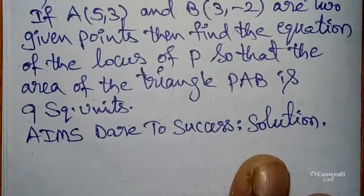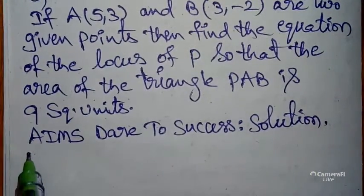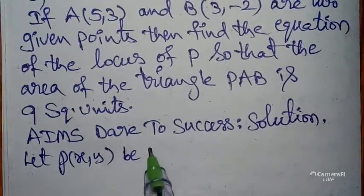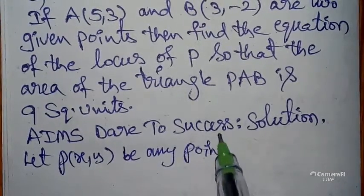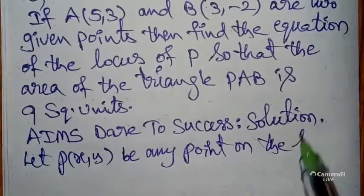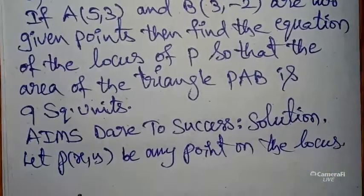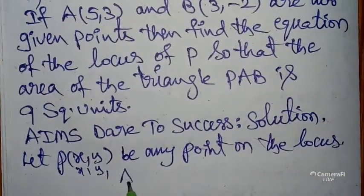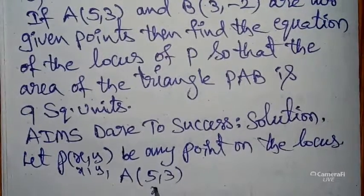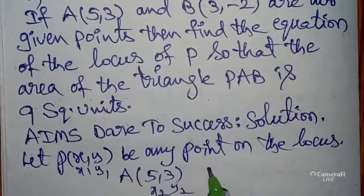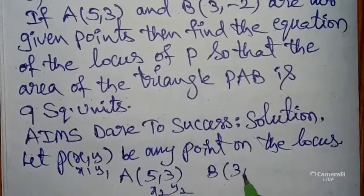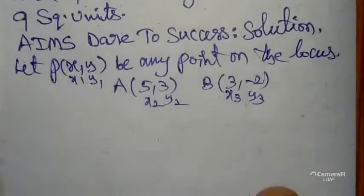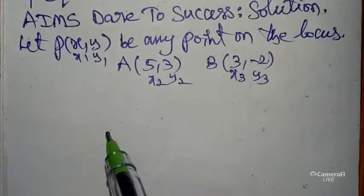First of all, before going to the solution, let P(x, y) be any point on the locus. So P(x, y) is (x1, y1). The next point A(5, 3) is (x2, y2), and B(3, -2) is (x3, y3). The given values are now set up.